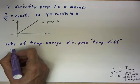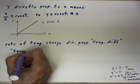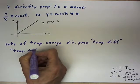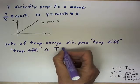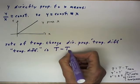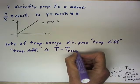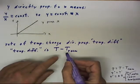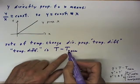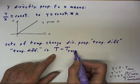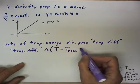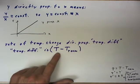So first of all, temperature difference is temperature of the object minus the temperature of the room. Now, this could be ambient temperature or temperature of the surroundings, we're going to say temperature of the room. So there's the motivation for the idea of temperature difference.